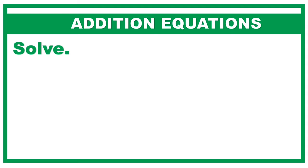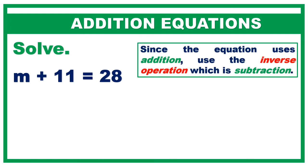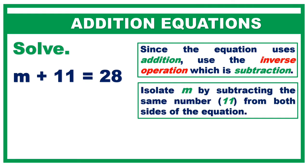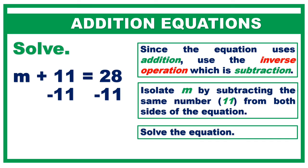Addition equations. Solve m plus 11 equals 28. Since the equation uses addition, use the inverse operation which is subtraction. Isolate m by subtracting the same number, 11, from both sides of the equation. Minus 11 on the left side, minus 11 on the right side. That cancels 11, leaving m isolated. Then let's bring down the equal sign and the answer to 28 minus 11, which is 17.